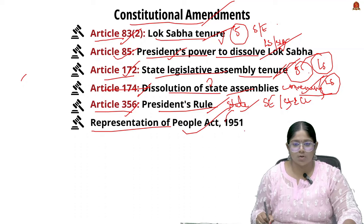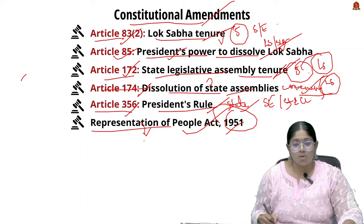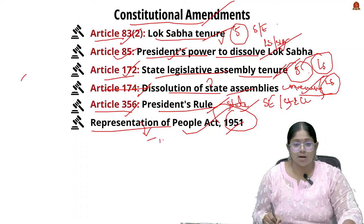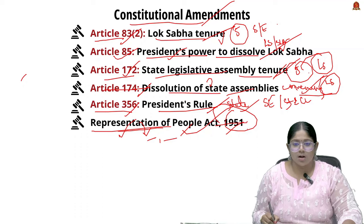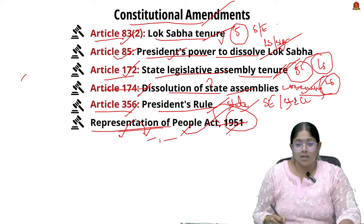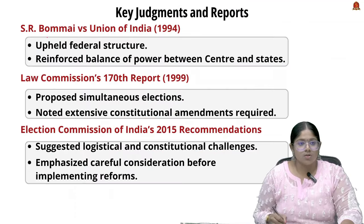The Representation of People Act of 1951 is important as it governs the conduct of elections in India. Issues like premature dissolutions, election timelines, and managing elections are noted under this act. For synchronized or simultaneous elections, the Representation of People Act of 1951 needs to be revised.